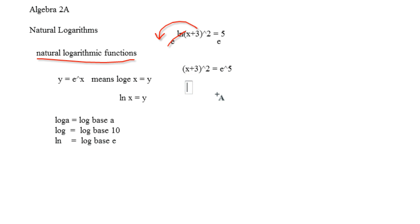So if we square root both sides, we get x plus 3 equals, now when you square root this, this is almost like you're multiplying the exponent by one half, so this is going to turn into e to the 5 halves.